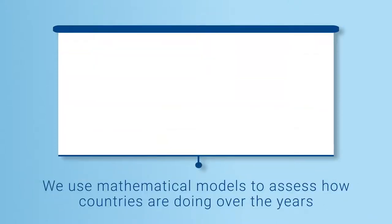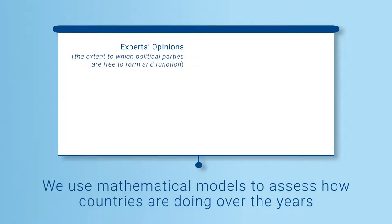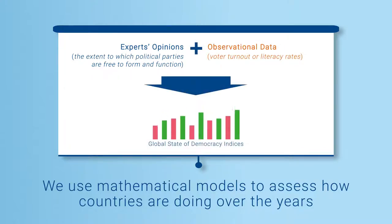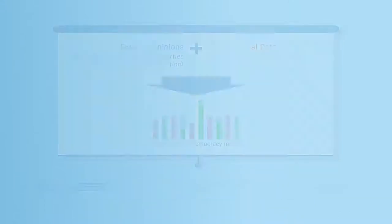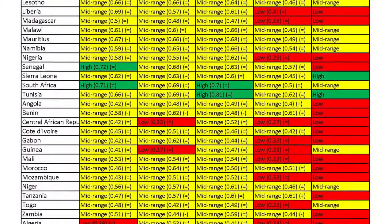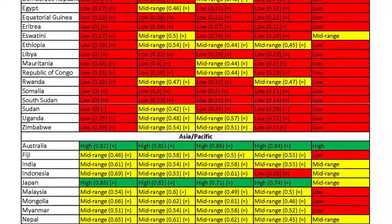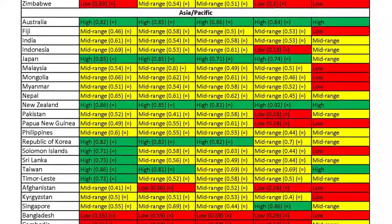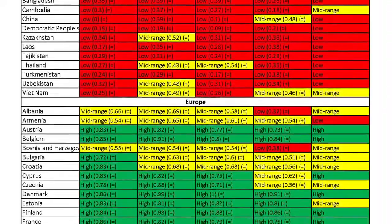We use mathematical models that combine experts' opinions — like the extent to which political parties are free to form and function — and observational data, like voter turnout or literacy rates, to assess how countries are doing over the years. We aggregate scores from multiple individual data sets, which means our scores are built on a variety of expert assessments.